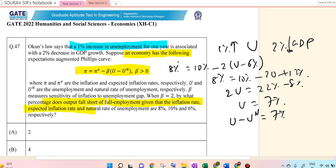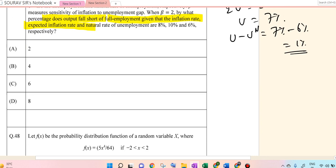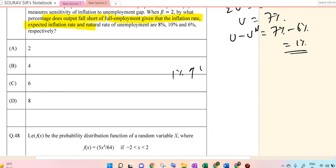So we have a 1% rise in unemployment rate and a 2% fall in GDP. If this is happening, then there's a 4% fall in GDP, so option D is correct.